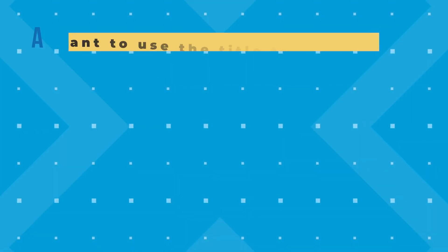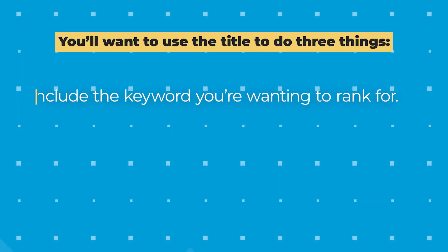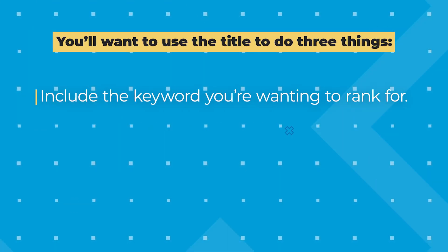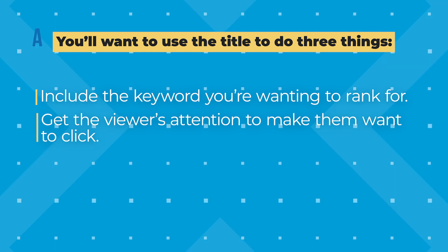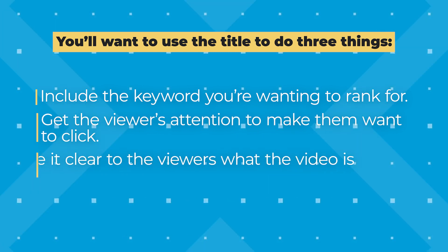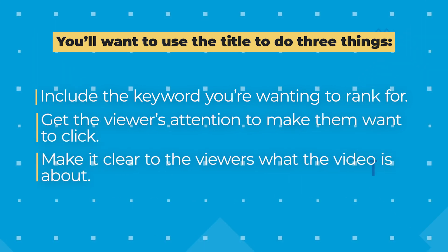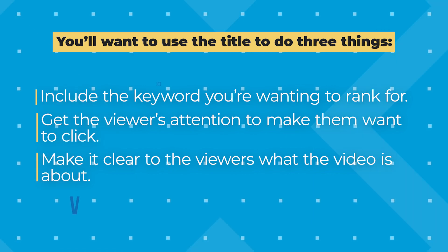You'll want to use the title to do these three things. Number one, include the keyword you're wanting to rank for. Number two, get the viewer's attention to make them want to click. And number three, make it clear to the viewers what the video is about. Don't get so clickbaity with number two that number three gets lost.